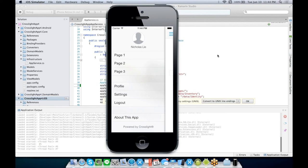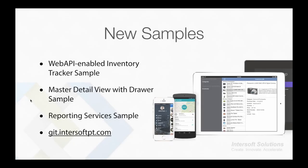That's done — five minutes, right? Let's move on to the slides. Crosslight 2 also ships with new samples, such as the Web API-enabled inventory tracker sample, the master detail view with drawer sample you saw earlier, and the reporting services sample. You can download them all from our Git repository at git.intersoftpt.com.